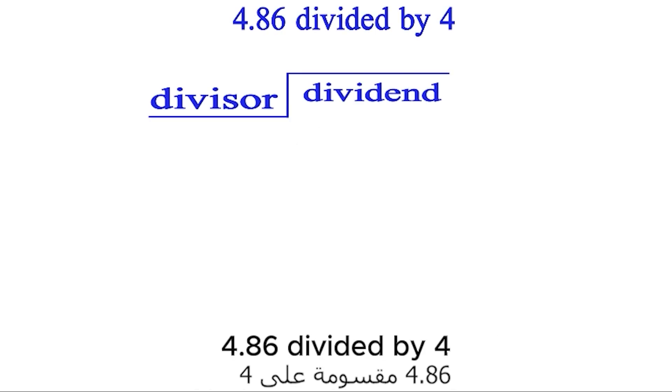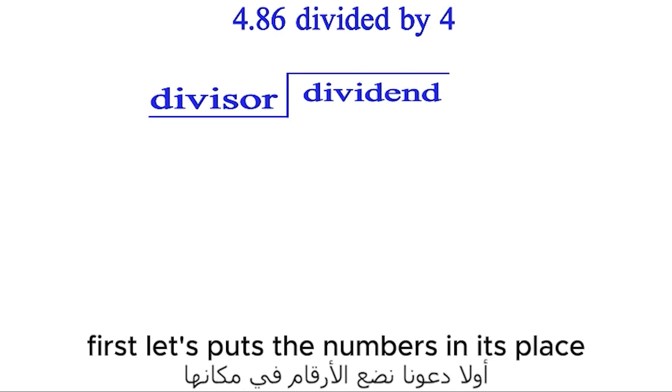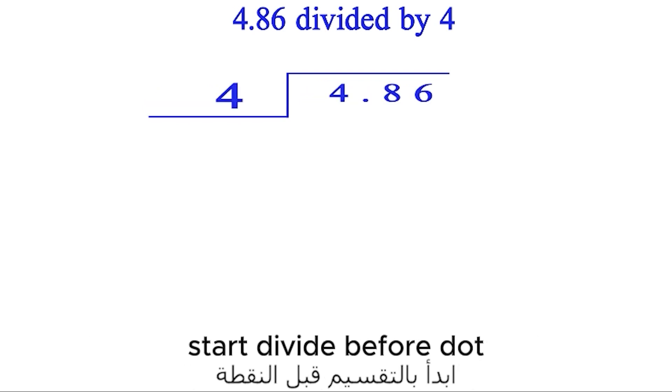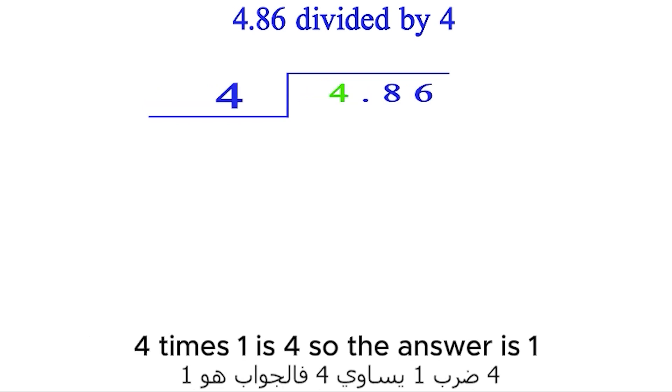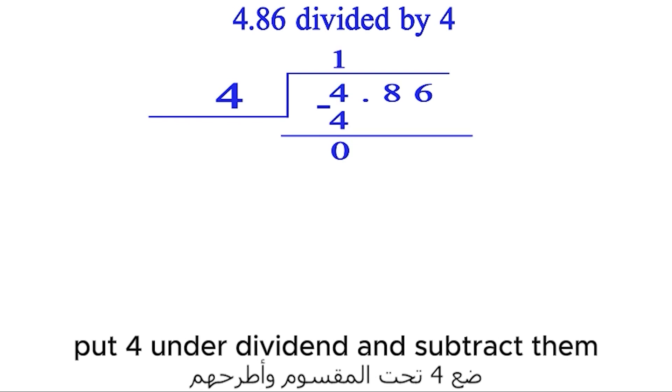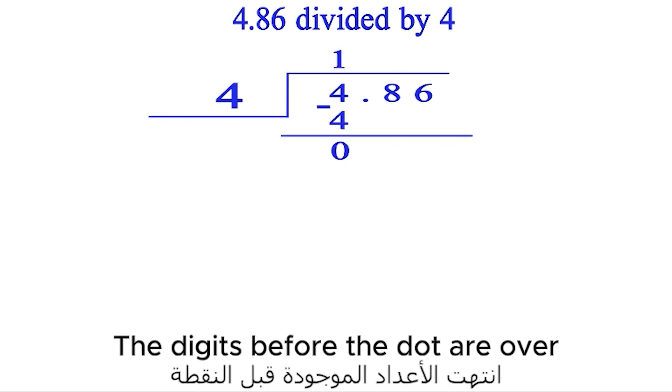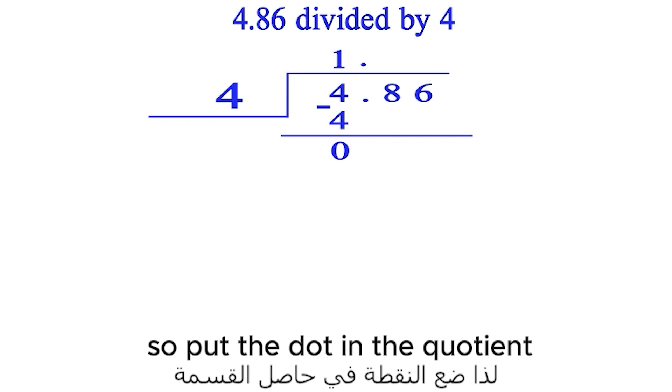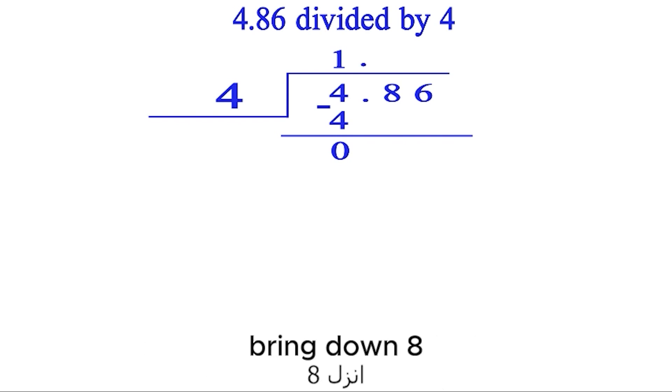Example 1: 4.86 divided by 4. First let's put the numbers in its place. Start divide before dot. 4 divided by 4: 4 times 1 is 4, so the answer is 1. Put 4 under dividend and subtract them. The digits before the dot are over, so put the dot in the quotient.